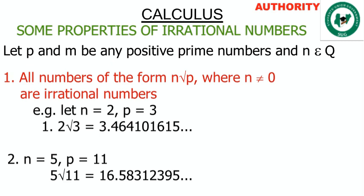For example, let n equal 2 and p equal 3. Then we get 2 root 3, which equals 3.4641016... continuing. When we look at this number we discover that it is non-terminating.